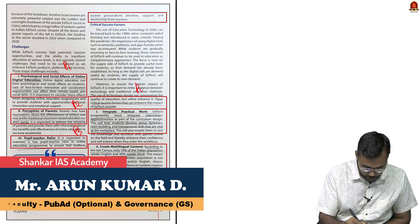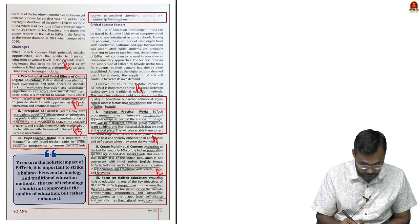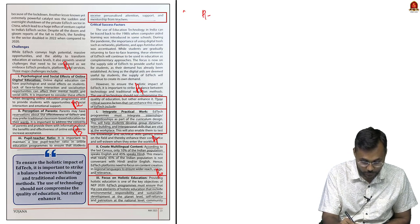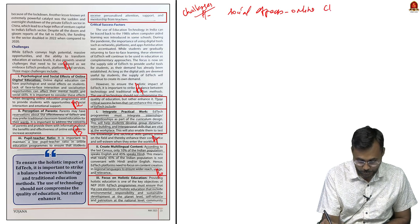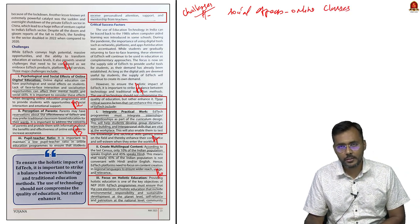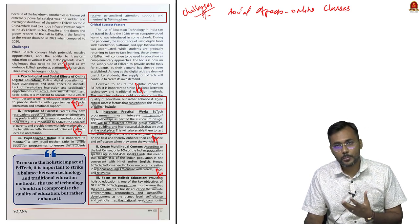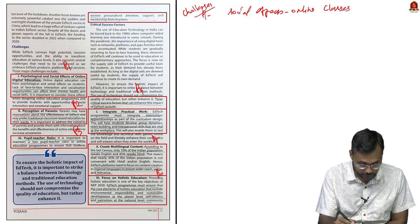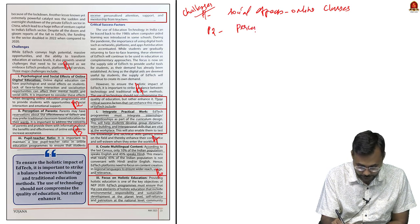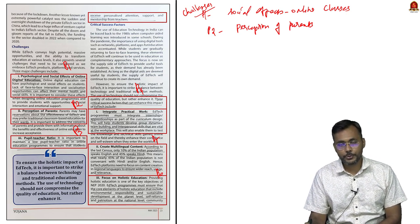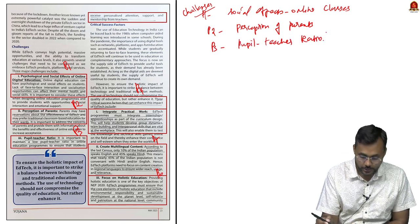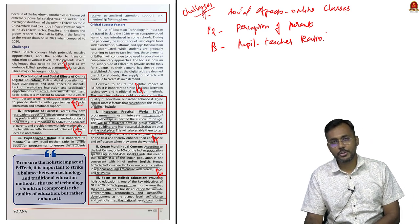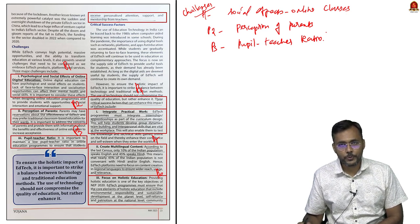Moving to challenges: paragraph 1 says social effects on online classes are a challenge, as students are not interacting with peers and may lose social skills. Paragraph 2 says perception of parents is a challenge — parents still believe offline classes are the best. Paragraph 3 discusses the pupil-teacher ratio as a challenge.